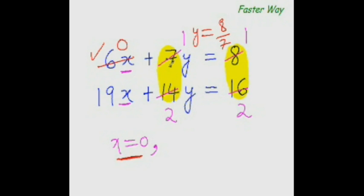You put the coefficient of y to the other side and it goes to the denominator, so y equal to 8 by 7. That is what your answer is: x equal to 0, y equal to 8 by 7.